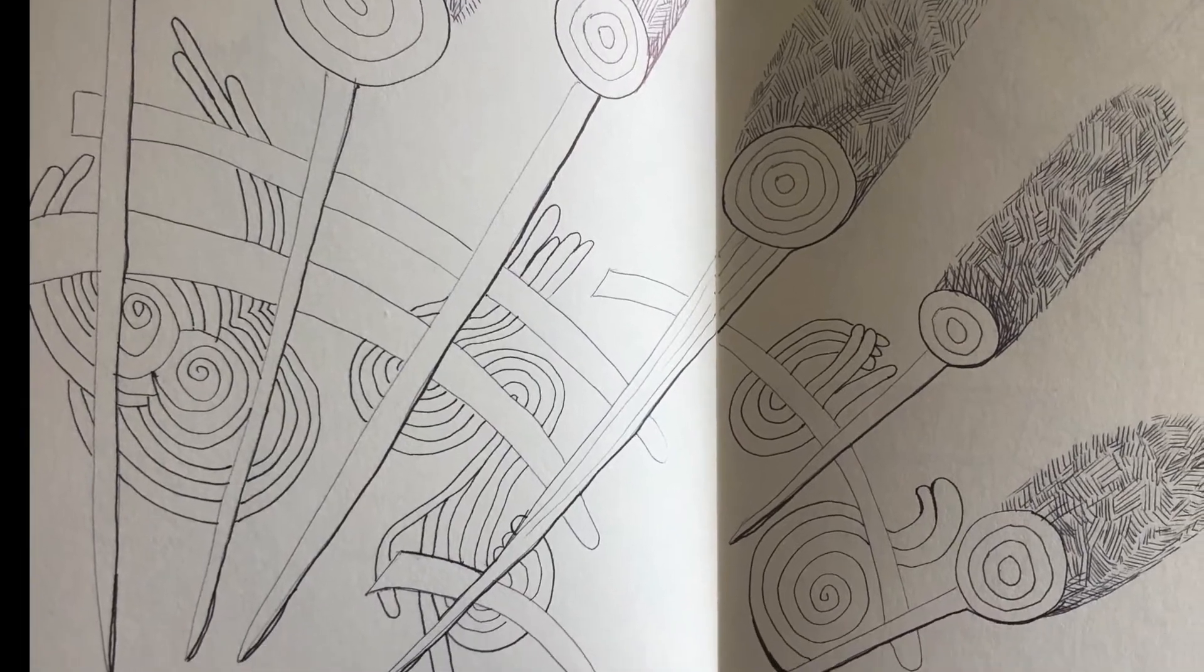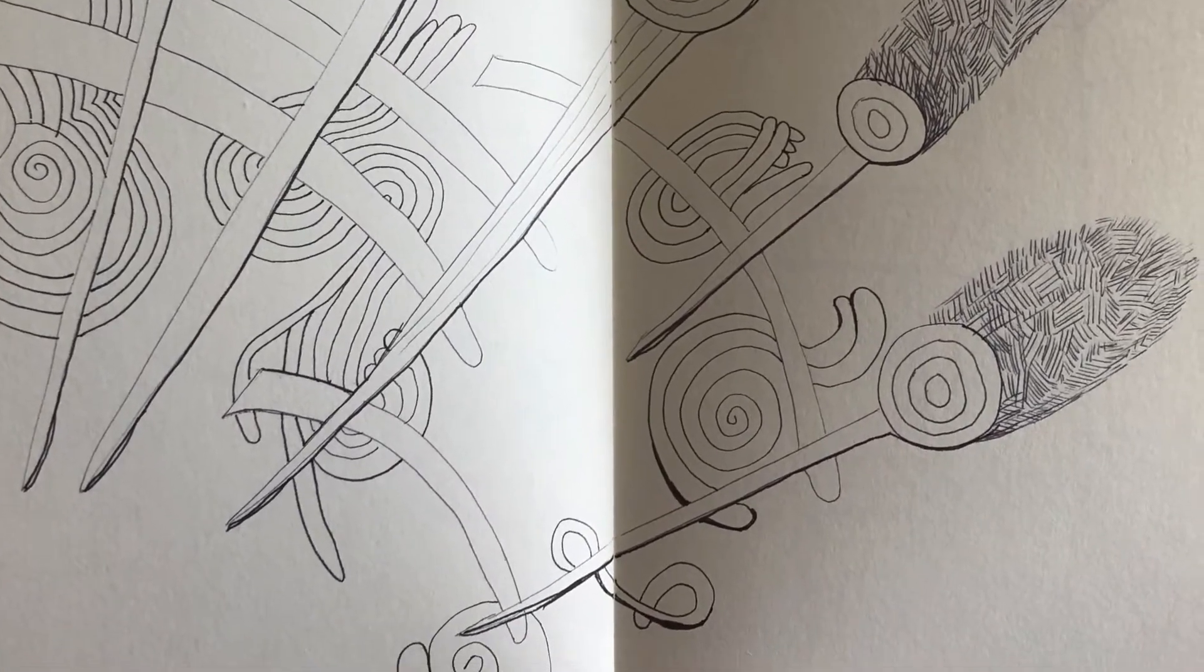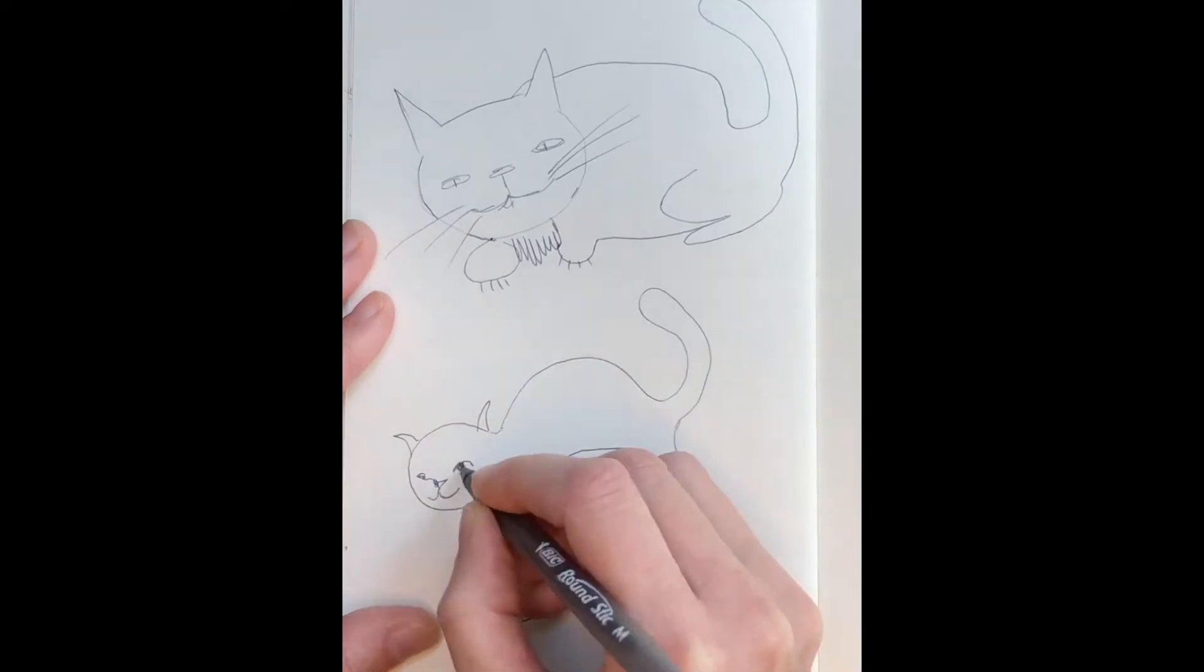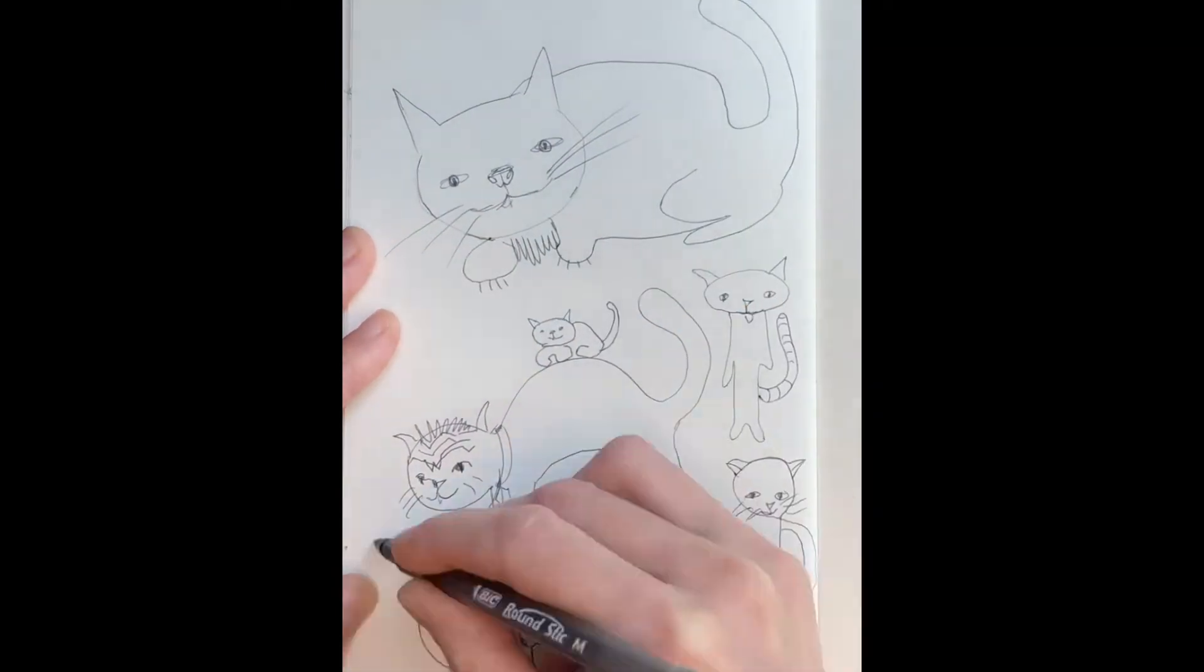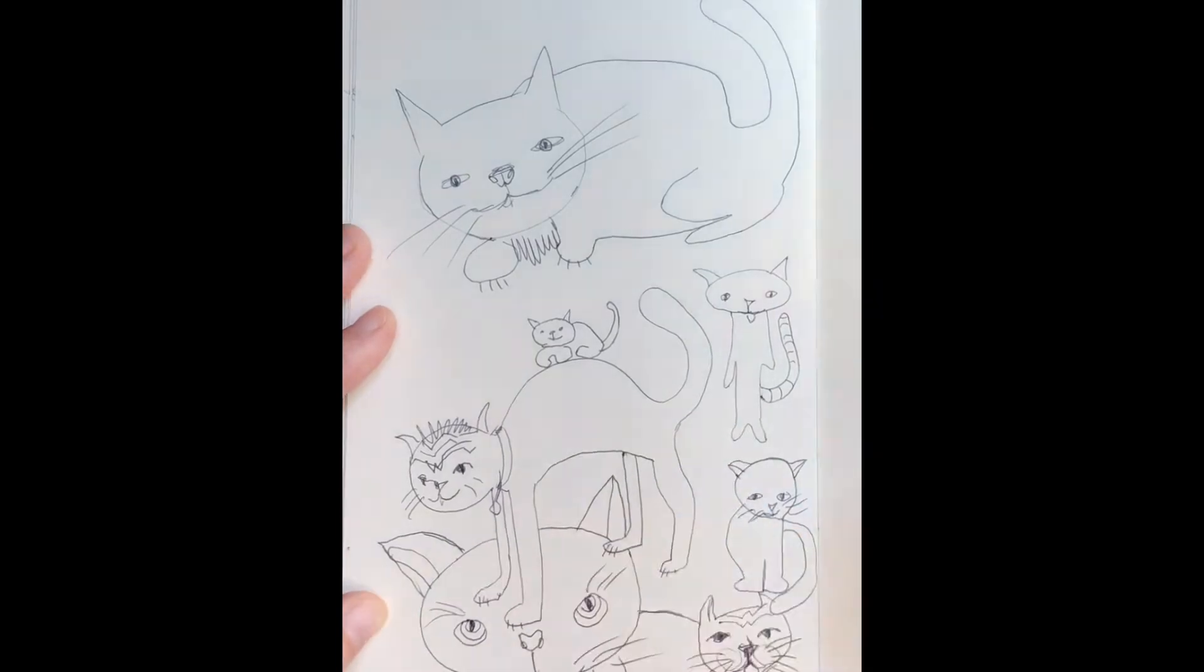This is a doodle that is totally abstract. This doodle is not abstract. It's representational because I'm drawing cats and it's still a doodle because I'm not erasing and I didn't really make a plan.